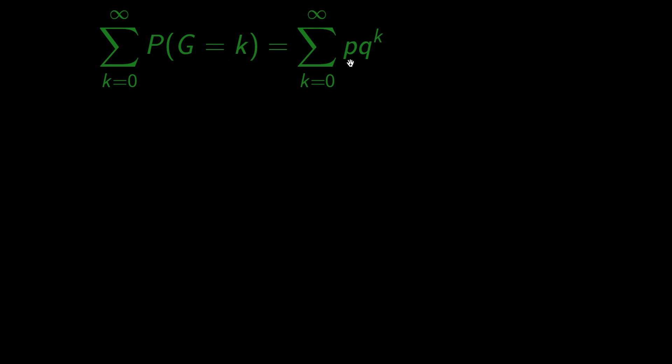Since p is in every possible result, we can take it out of the sum. What we have left in the sum is the so-called geometric series. A series where each element is the previous one times the constant ratio, which in our case is equal to q. This is why the distribution itself is called geometric.